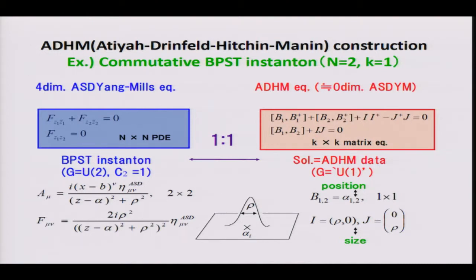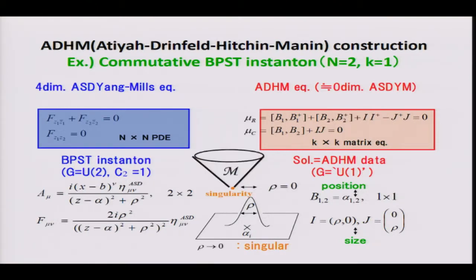I would like to comment on the rho-zero limit. In the rho-zero limit, this configuration becomes singular. This corresponds to the existence of singularity in the instanton moduli space. This is also easily understood from the ADHM side: when rho is non-zero, the dual gauge group action is non-trivial, but in the rho=0 case, both I and J become zero, so the gauge group action becomes trivial — we have a fixed point, and the quotient space has an obvious singularity. This is the story in commutative spaces.